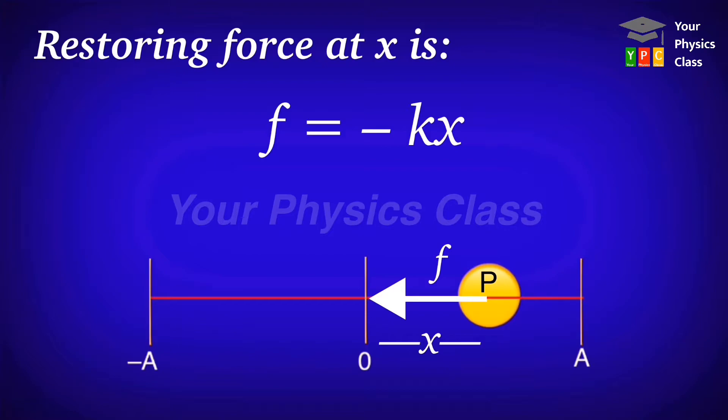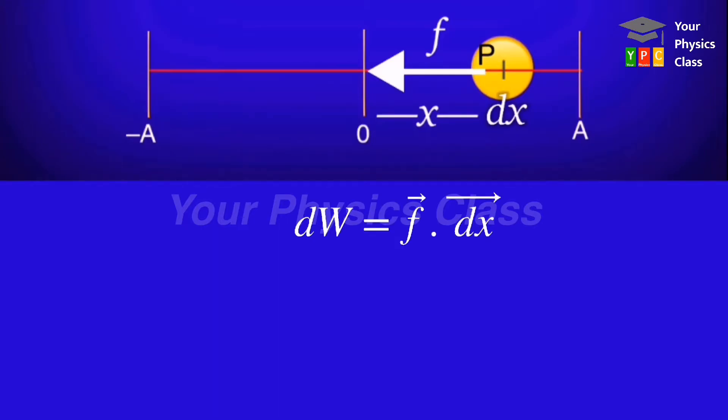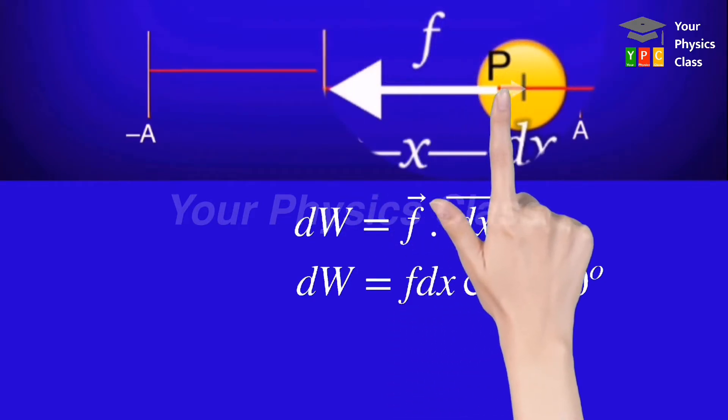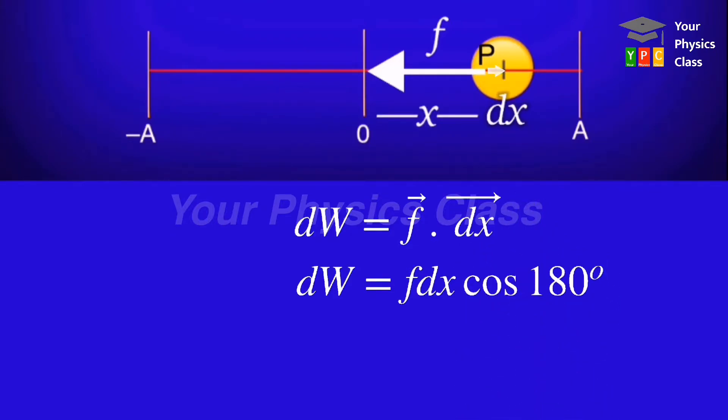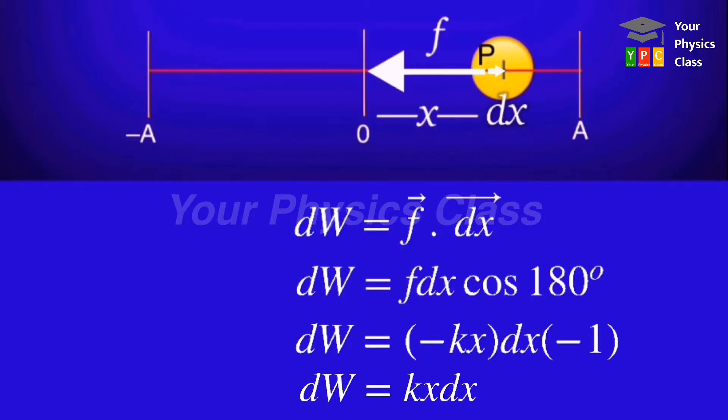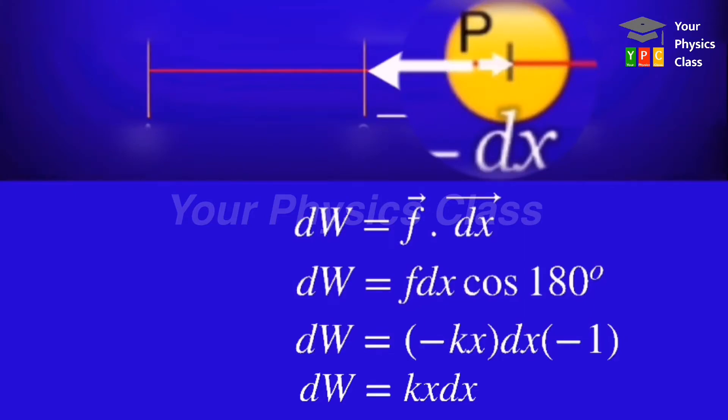If the particle is displaced against this force f through a very small displacement dx, then the work done by this force would be dw equals vector f dot vector dx. So work done is basically the scalar product of these two vectors. Expanding this, we get f into dx cos 180. 180 came because friends, force and displacement are oppositely directed, so the angle between them is 180 degrees. Now cos 180 gives us negative one. Substituting the values of force and cos 180, see what we get. So on simplifying, we get the work done as kx dx. Friends, this is the work done for small displacement.